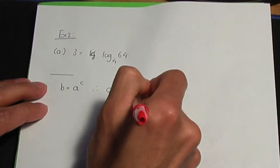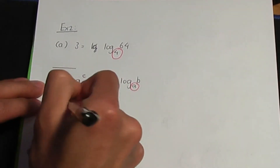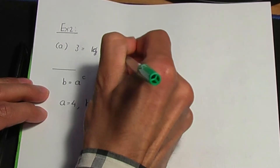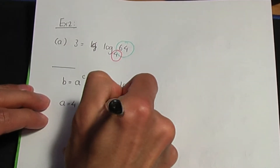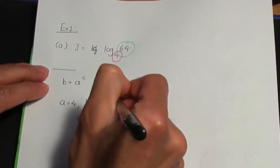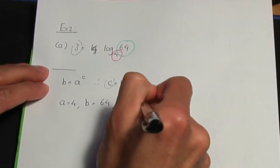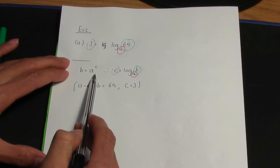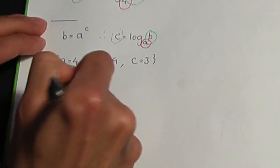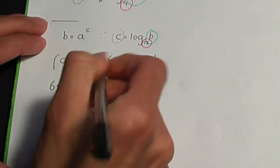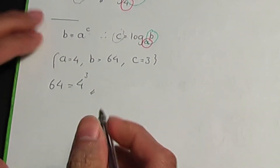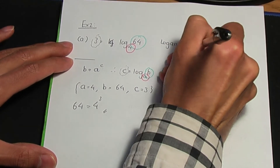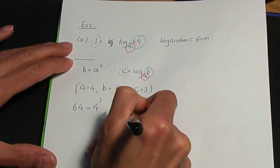We can note that a — the base — is four. How about b? b, by comparison, is 64. How about c? c, by comparison, is three. Now that I know what a, b and c are, let me substitute into the part of the relation which is in index form. b in this case is 64 — that is equal to a, which is four, to the power of c, being three. The equation in question was in logarithmic form, but we wrote it in index form with the aid of the relation.